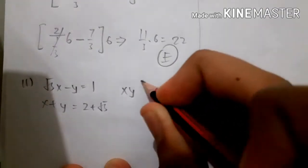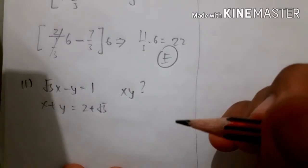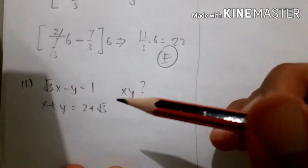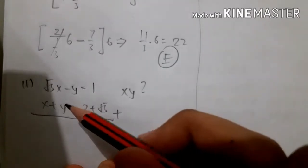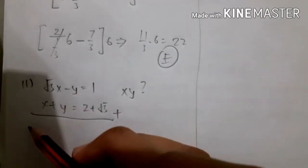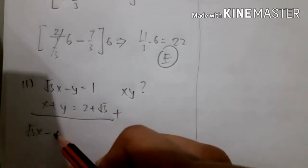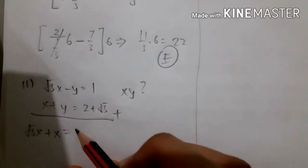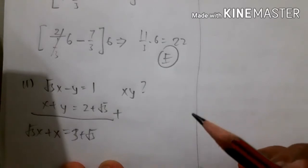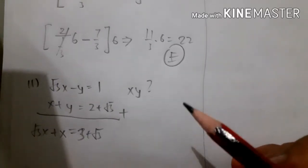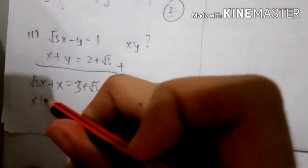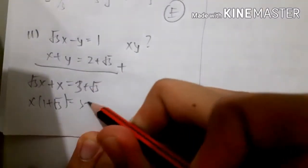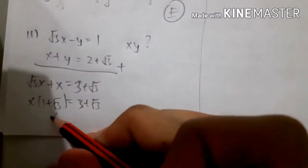Now for x multiplied by y — you can see that y is equal here, and we can add so that terms become eliminated. That gives root 3·x plus x equals 1 plus 2 plus root 3, which is 3 plus root 3. From this onwards we can factorize it and find x.